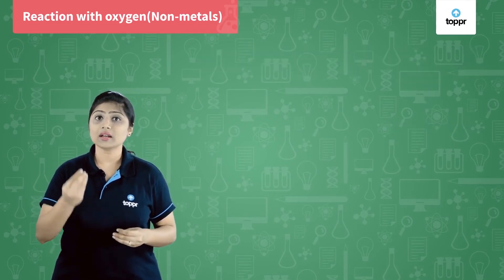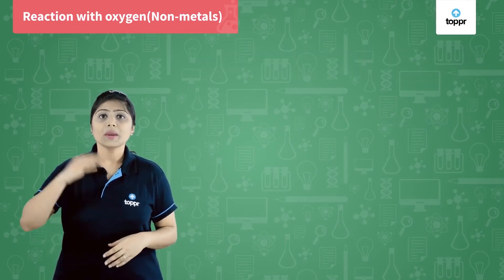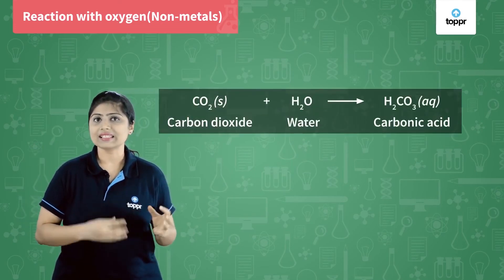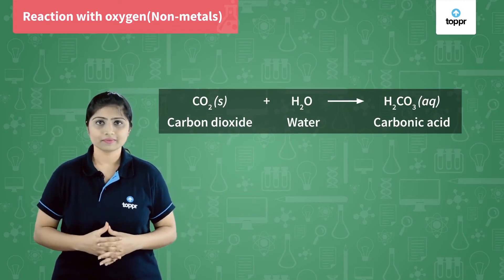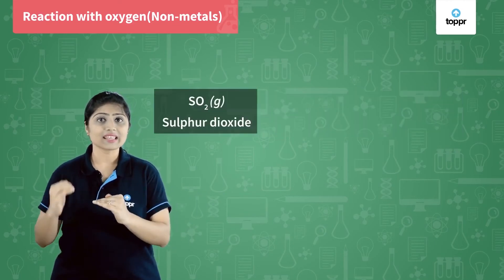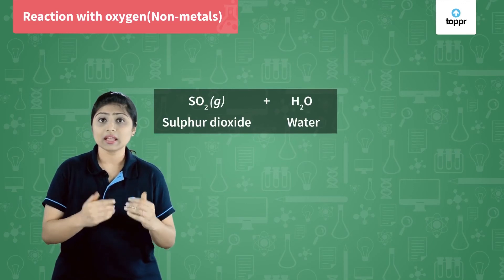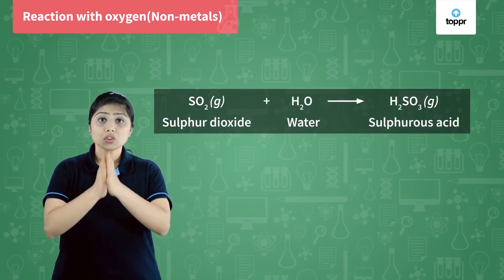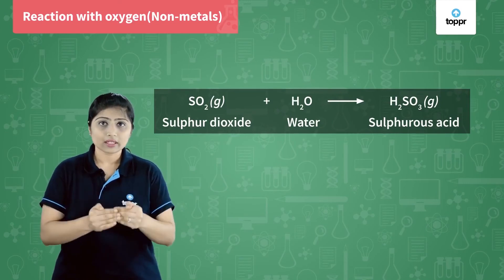Now, what must be happening when non-metal oxides come in contact with water? When CO2 comes in contact with water, it forms an acid — carbonic acid, that is H2CO3. And when sulfur dioxide, SO2, comes in contact with water, it forms sulfurous acid, that is H2SO3. Due to which, when these gases come in contact with moist litmus paper — which has water in it — they form acid and turn the litmus paper from blue to red.